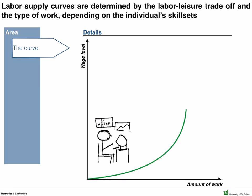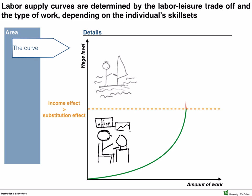However, as the wage rate increases, workers at a certain point will want to spend the higher level of wages on leisure time. As a result, workers will work less, describing the income effect. In the case where at a certain wage rate the income effect is stronger than the substitution effect, the supply curve will be backward bending.